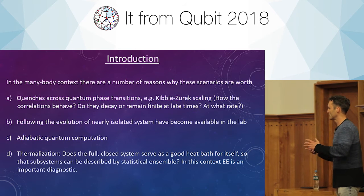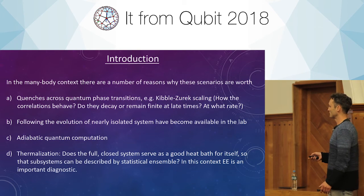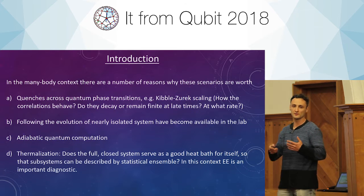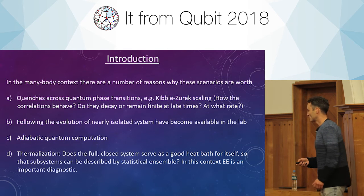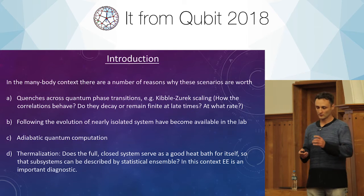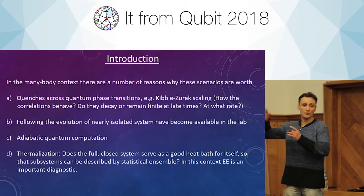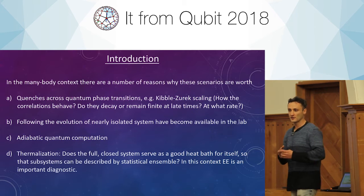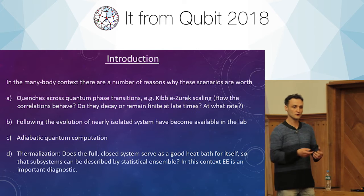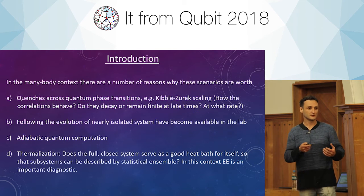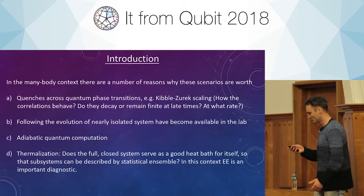To make the story short, let me summarize this effort in one question: we ask whether the full closed system can serve as a good heat bath for itself, so that subsystems can be described by a statistical ensemble at least in some effective way. In this context, entanglement is a very useful tool. You consider some small subsystem, ignore all the rest, and integrate it out. Even if you are in a pure state initially, you end up with some entangled state, and then following the evolution of this entangled state might tell you whether it can indeed be described effectively as some statistical ensemble.